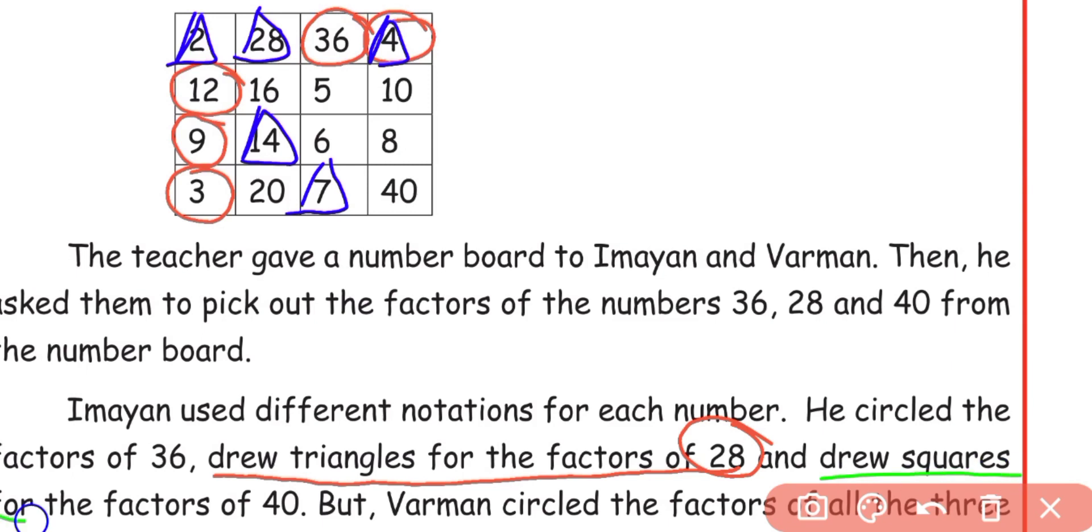Next, drew squares for the factors of 40. 2, 20's are 40. 8, 5's are 40. 10, 4's are 40. That's all.